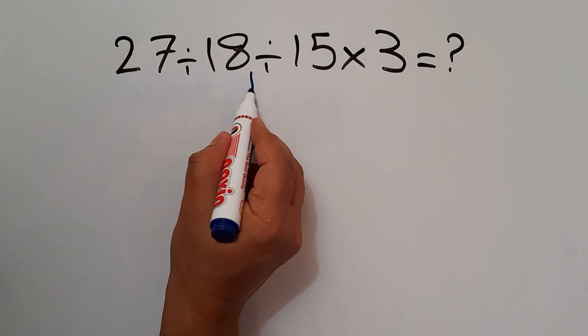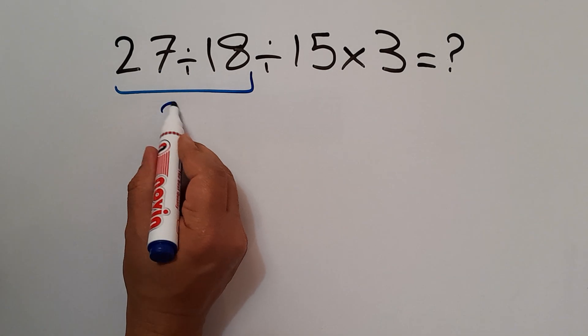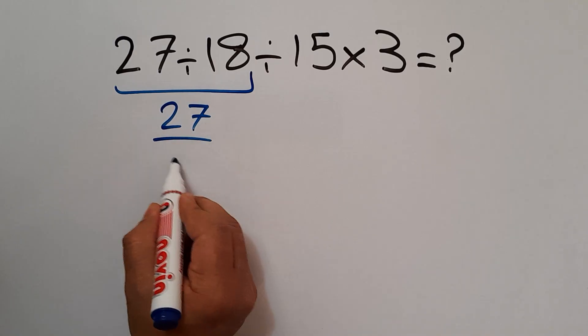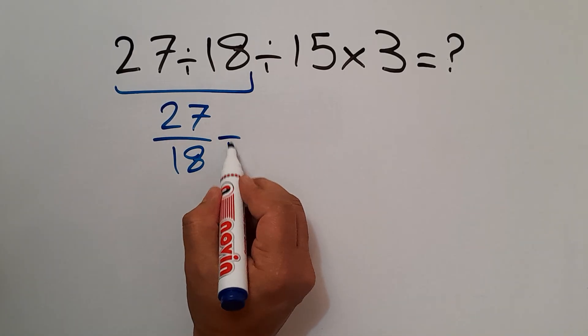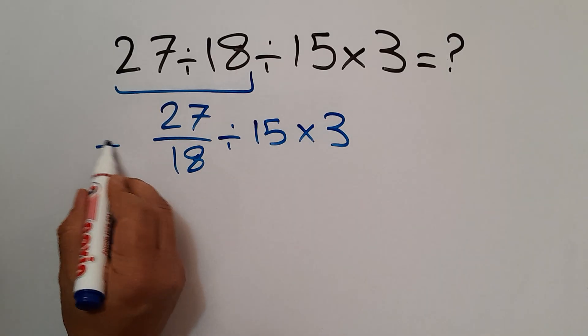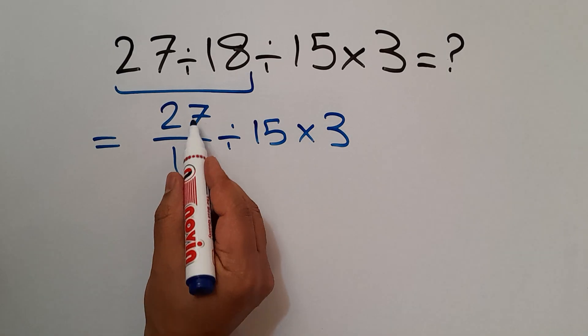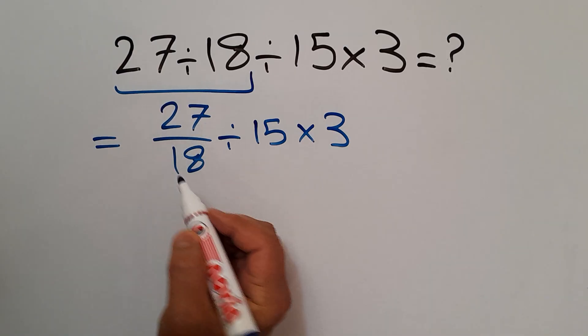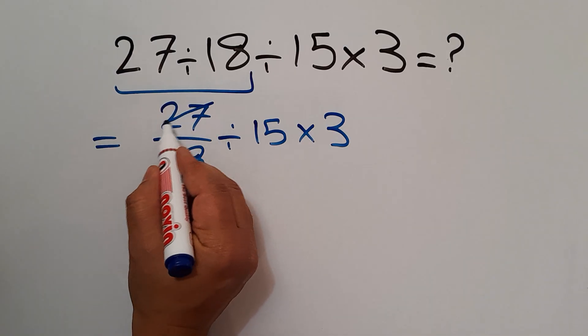27 divided by 18, we can write 27 over 18 and divided by 15 then times 3. Okay, let's simplify this fraction. 27 divided by 9 gives us 3.